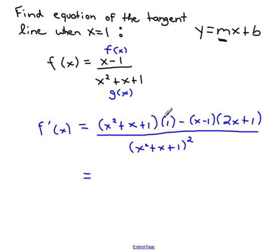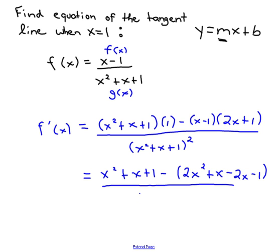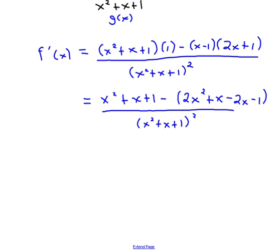What is going to be the next step? The next step will be to foil everything. This multiplied by 1 will simply remain. This, what I would like to do, and what you guys should do, is keep the minus sign, foil this first within a bracket. So, 2x squared plus x minus 2x minus 1, divided by the same denominator.